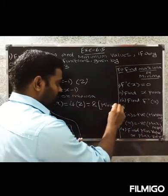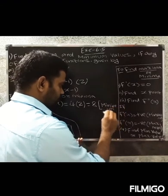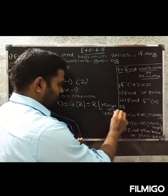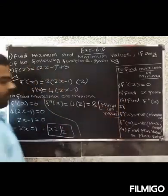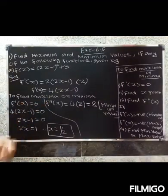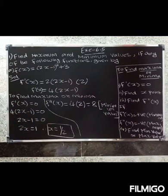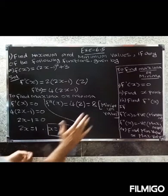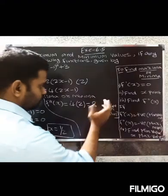Since f''(x) is positive, f has a minimum value. If f''(x) is positive, then f is minimum at x = 1/2.